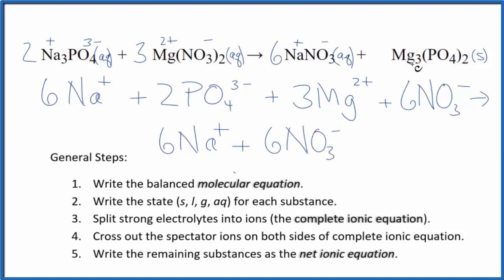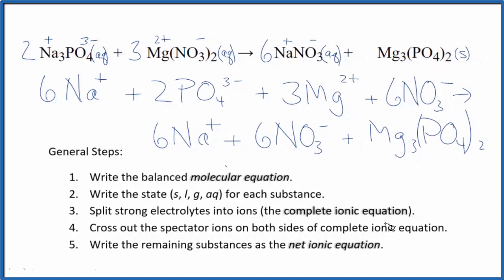And then for the Mg3(PO4)2, the magnesium phosphate, it's a solid. We do not split solids apart in net ionic equations, so it's just Mg3(PO4)2. So this is the complete ionic equation for Na3PO4 plus Mg(NO3)2.